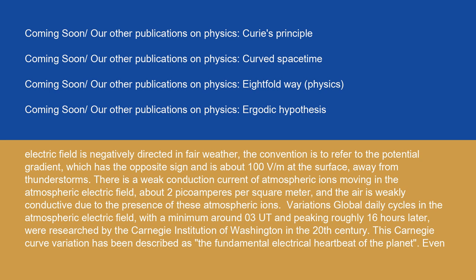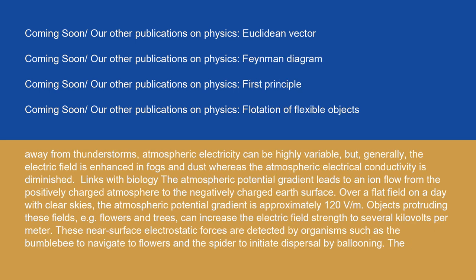Global daily cycles in the atmospheric electric field, with a minimum around 03:00 UT and peaking roughly 16 hours later, were researched by the Carnegie Institution of Washington in the 20th century. This Carnegie curve variation has been described as the fundamental electrical heartbeat of the planet. Even away from thunderstorms, atmospheric electricity can be highly variable. But generally, the electric field is enhanced in fogs and dust, whereas the atmospheric electrical conductivity is diminished.